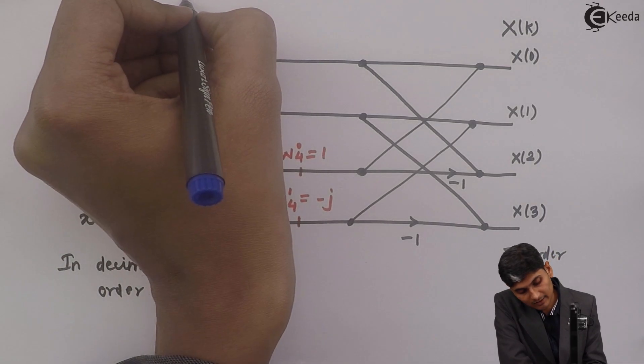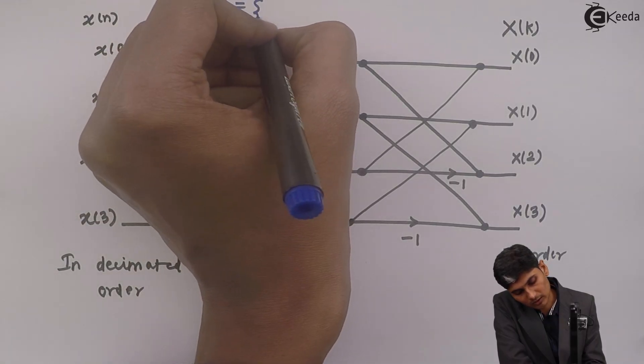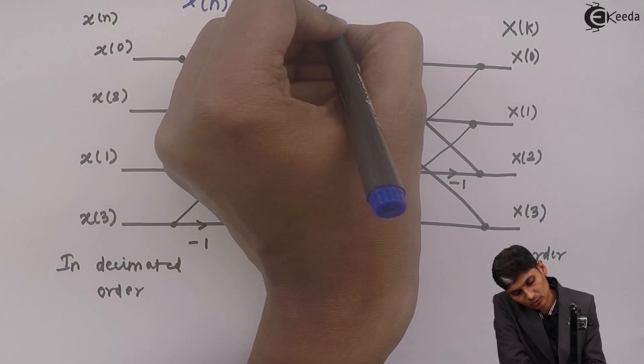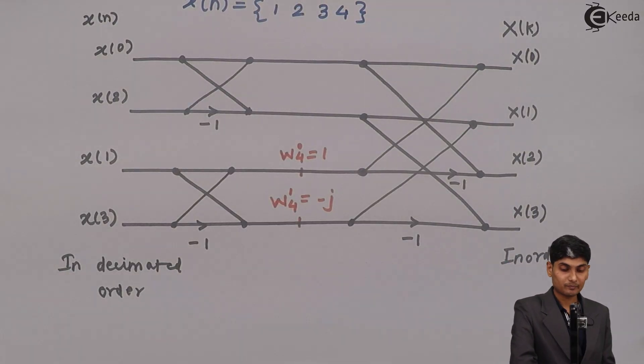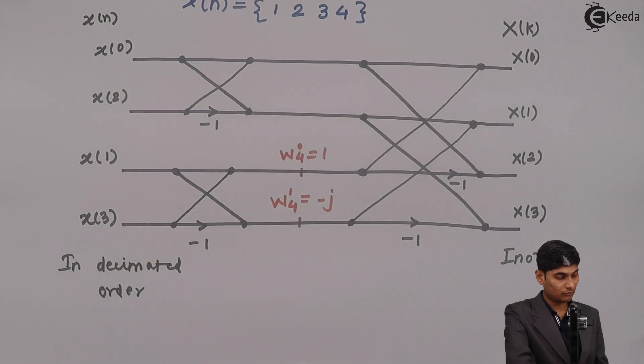Let us consider a problem x of n as equal to 1, 2, 3, 4. It's a 4 point sequence with values given as 1, 2, 3, 4.